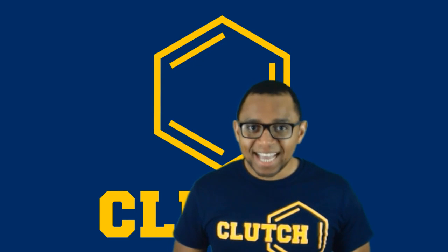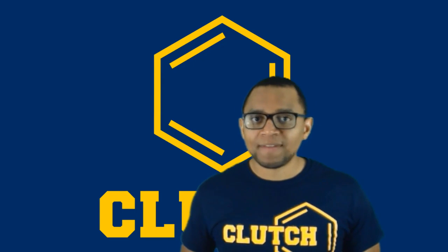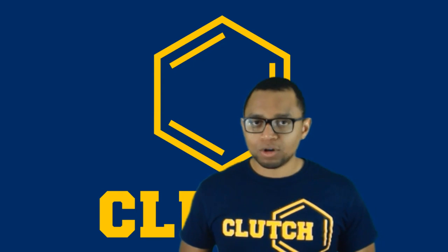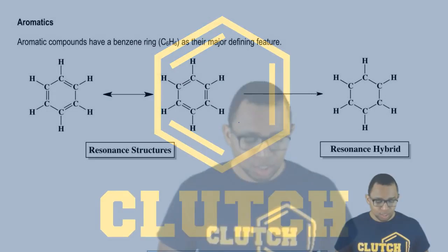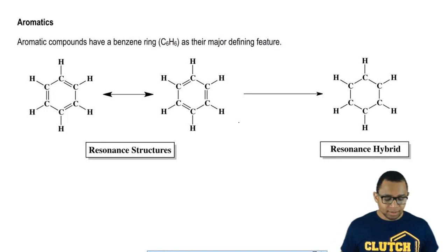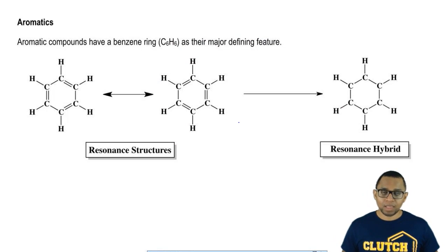Let's look at this last section dealing with the fourth type of hydrocarbon: aromatic hydrocarbons. Aromatic compounds have a benzene ring in common — that's their major feature.